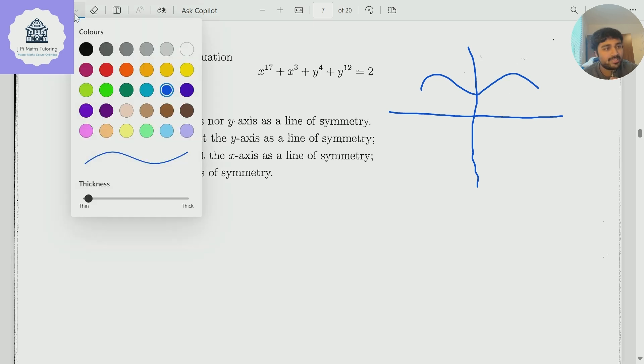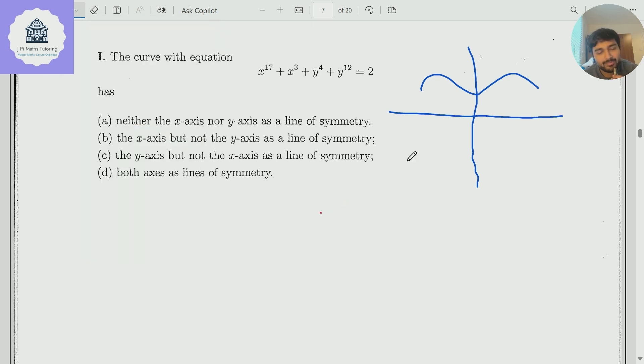Now, what does it really mean for it to be symmetric in the y-axis? Well, it means that if I take a point here, so let's just say that this graph has equation y equals f of x, then if I look at this point, let's say that's minus 1 and this is 3,